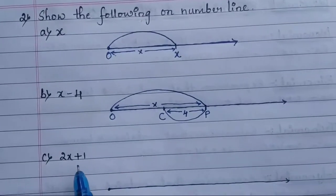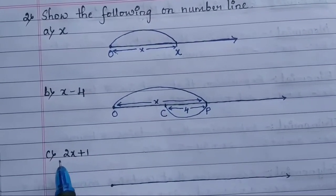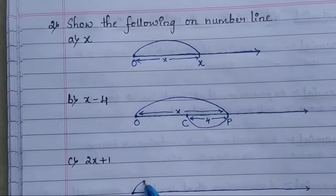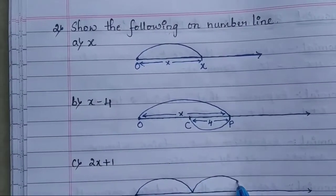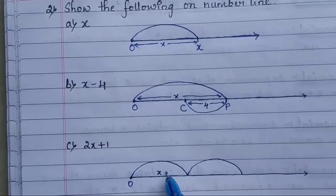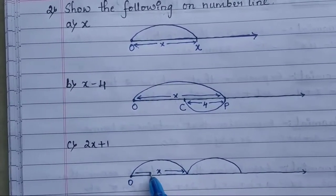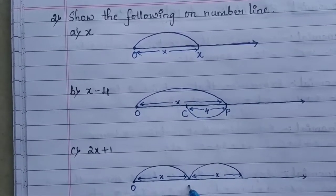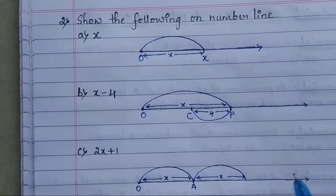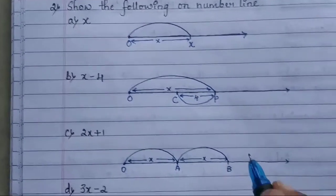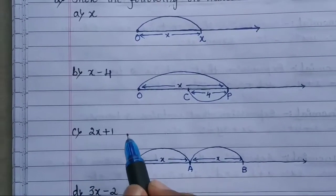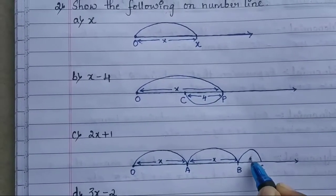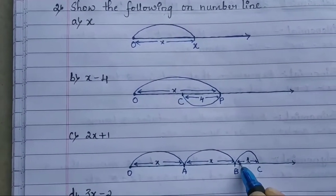For 2x + 1: starting from 0, we mark x once (point A) and again (point B), giving us 2x total. Since it is +1, we move one more unit to the right in the forward direction. So the final point represents 2x + 1 on the number line.